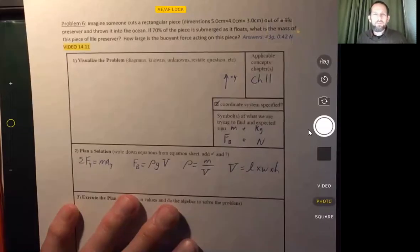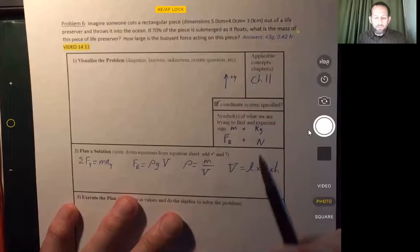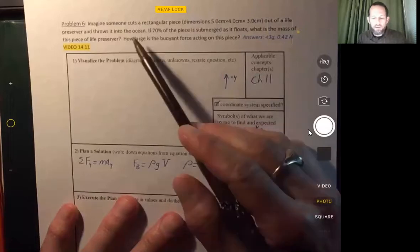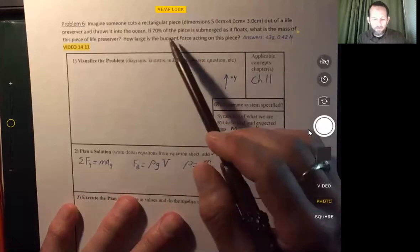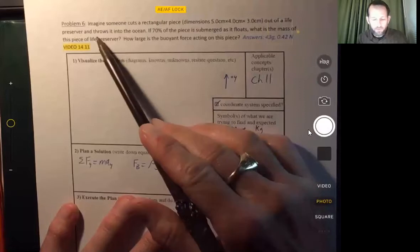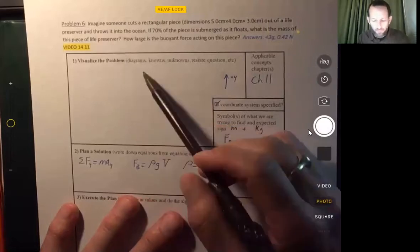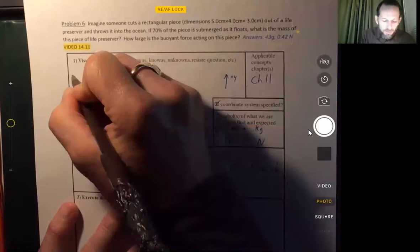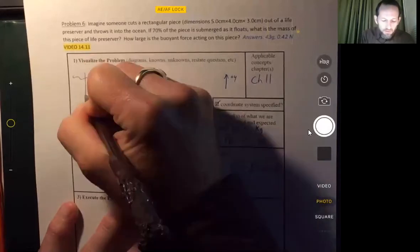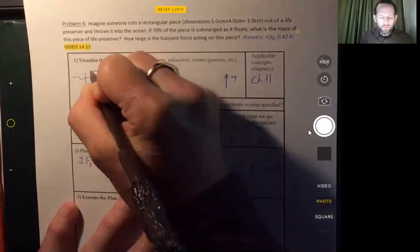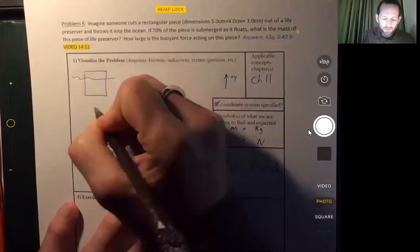All right. Hello, everyone. Let's take a look at this problem where we have a rectangular piece of a life preserver. I don't know why someone would cut apart a life preserver, but anyway, here we go. And 70% of it is below the surface. So there's a little sketch of the situation.